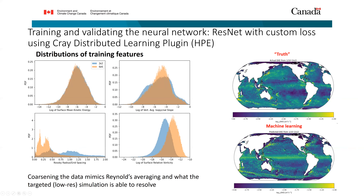The distributions of features change depending on how much coarsening you do, and we did that to come up with a machine learning model general enough for use at multiple scales — mimicking what Reynolds averaging does in those equations. The validation shows the top panel as the actual eddy kinetic energy calculated from the high-resolution model, and the bottom panel as what the neural network predicted. The large-scale features are very similar. One notable thing is the bottom one looks sharper than the truth, because we're not incorporating any spatial information — everything is done grid point by grid point.